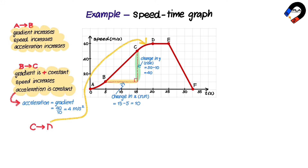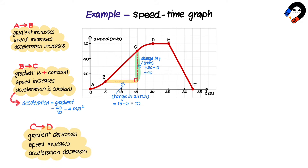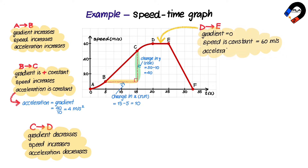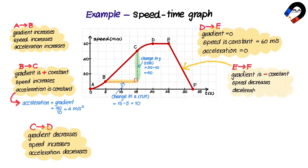Between C and D, the gradient is decreasing, so the speed is increasing with decreasing acceleration. Between D and E, the gradient is constant with no acceleration. Between E and F, the gradient is negative and constant, so the speed is decreasing with constant deceleration.